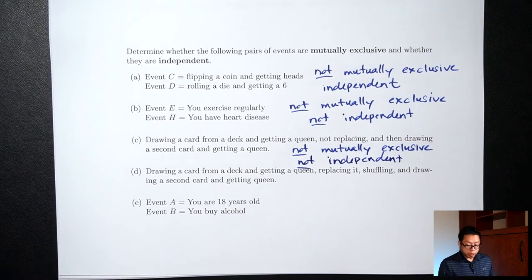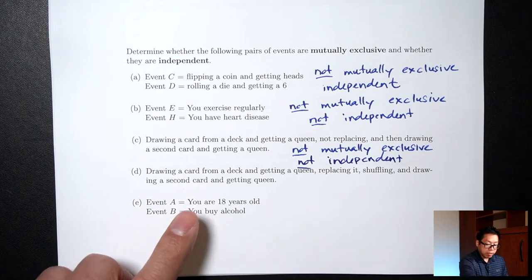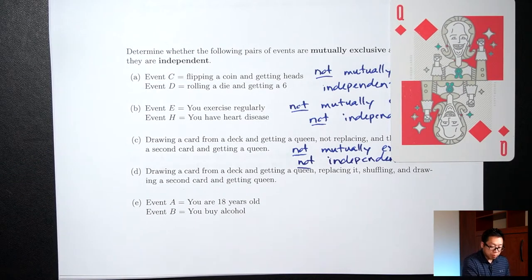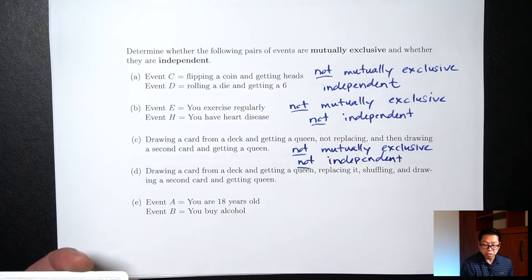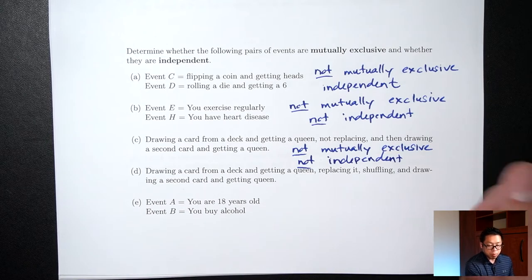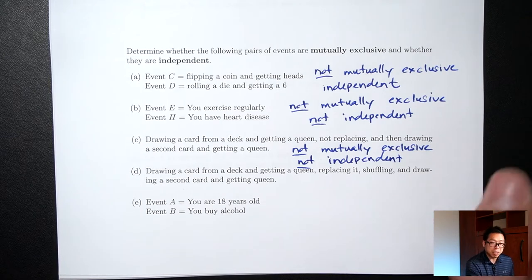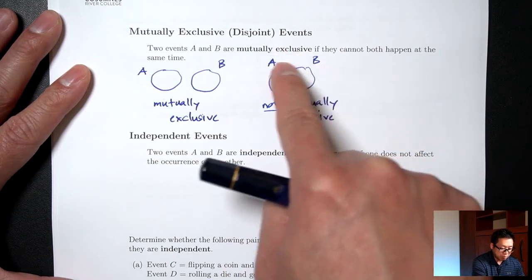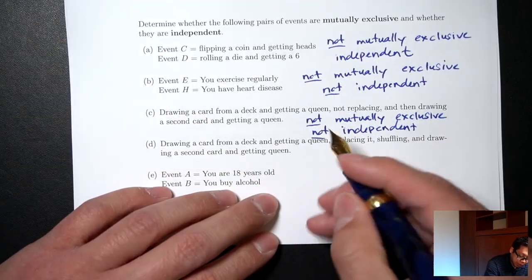Part D is a similar situation: drawing a card from a deck and getting a queen, but this time we're going to put it back, shuffle, and then draw a second card. First, are these two things mutually exclusive? Can you get a queen, put it back, reshuffle, pick a second card, and get a queen again? Can you get two queens? Yes, you can. Because you can get two queens, we're in the situation where you can be in both at the same time. This will be not mutually exclusive.